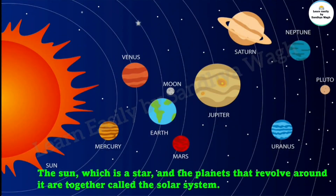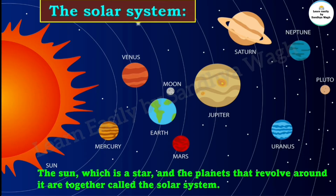The sun, which is a star, and the planets that revolve around it are together called the solar system.